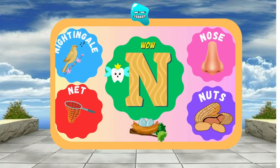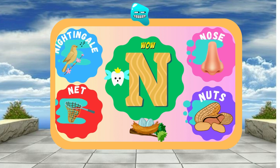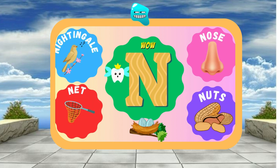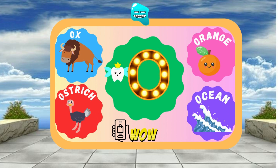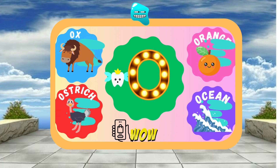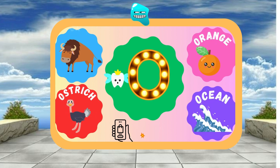N is for Nose — N, n, Nose. N is for Nest — N, n, Nest. O is for Orange — O, o, Orange. O is for Otter — O, o, Otter.